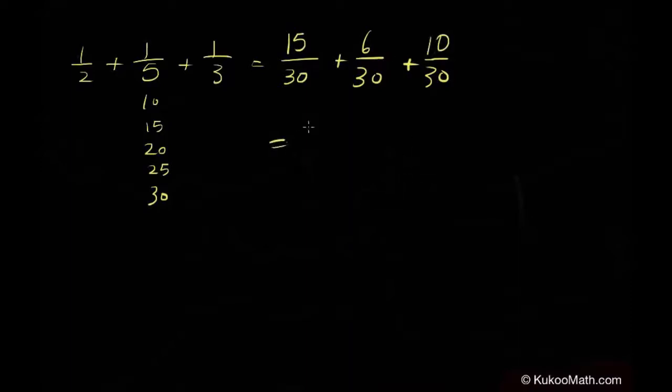Now, we can add everything together. Fifteen plus six plus ten. Fifteen plus six is equal to twenty-one. Plus ten is thirty-one over thirty.